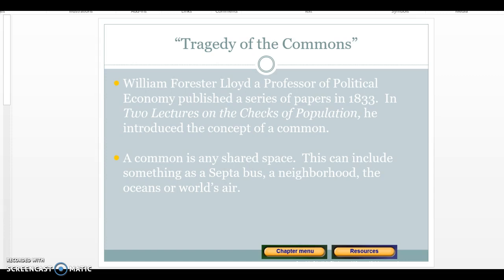Any shared space can be a commons: it can be the world's air, all the land in the world, the land in Arizona, New Jersey, or Pennsylvania. It could be water — the Delaware River, the Atlantic Ocean, or the air over a certain state or the entire world. All of these are considered commons; they are shared by everyone.